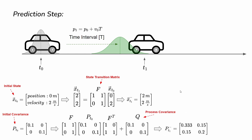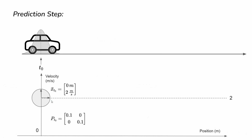To visualize and understand this better, let's plot position versus velocity. At time zero we plot the initial state and initial covariance. Since the initial covariance is diagonal with equal values and zeros off-diagonal — meaning no correlation — it looks like a circle. The arrows I have drawn are the eigenvectors of this covariance matrix. The eigenvectors are horizontal and vertical, confirming no correlation at all between position and velocity at this time.